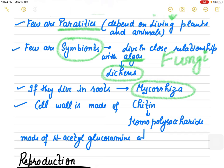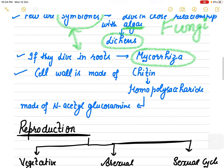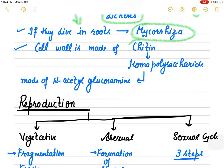The cell wall of fungus is made up of chitin. This is a very important point. Chitin is a homopolysaccharide made of N-acetyl glucosamine.